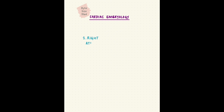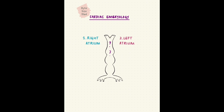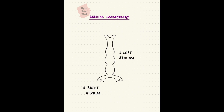Now we look at the chambers of the heart. The right and left atria develop from the heart tube. Your task is to recall which parts of that tube form the right atrium and which parts form the left. Pause the video here and take as much time as you need.